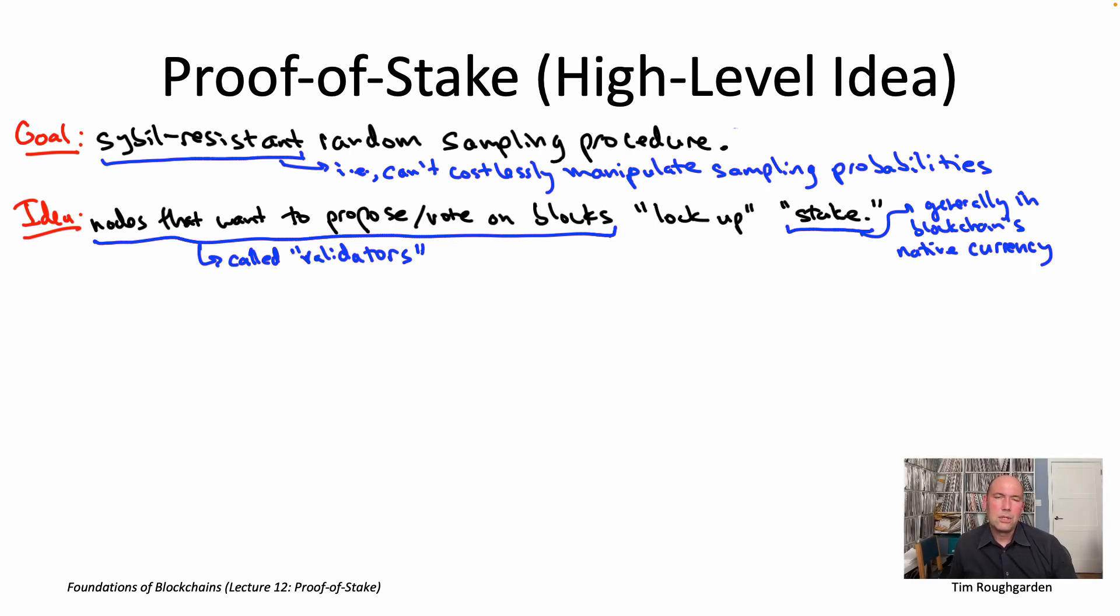Furthermore, some blockchain protocols that use proof of stake Sybil resistance, including, for example, modern day Ethereum, use a technique known as slashing, which is basically taking funds away from misbehaving validators. And for slashing to really have its full force, you really kind of need validators to be staking in the blockchain's native currency. The protocol has to actually have direct control over the currency in which the stakes are denominated.